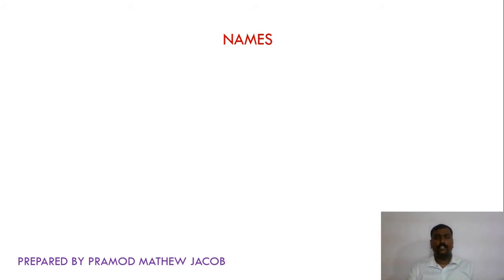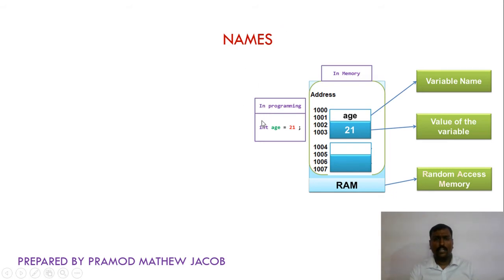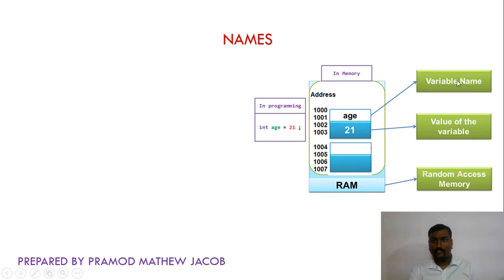Next, let's see what a name is and how a name is bound with a value and an address. Consider the statement in programming: int age = 21. When executing this instruction, age is a variable name of type integer and the value 21 is assigned to it. An integer consumes four bytes of memory — 32 bits. So addresses 1000, 0001, 0002, 0003 may be reserved for the variable age. The value 21 is bound with the variable name age. All this mapping takes place inside the random access memory, where program execution occurs.